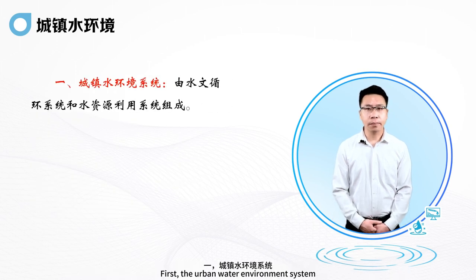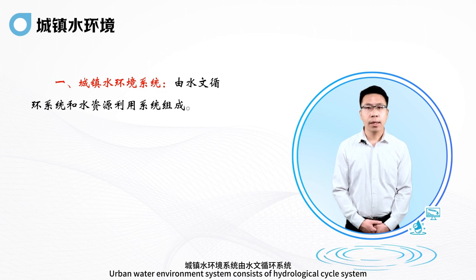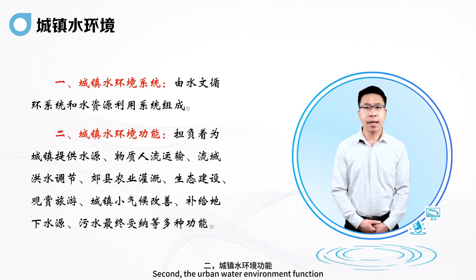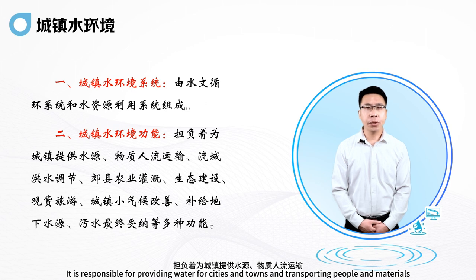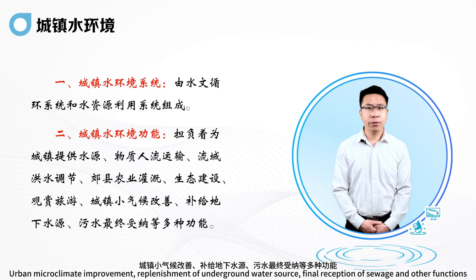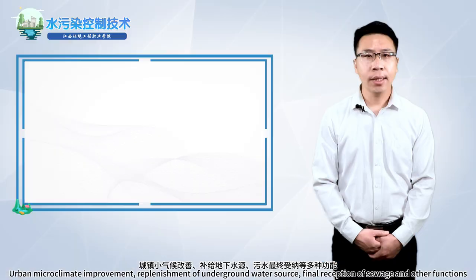First, the urban water environment system consists of a hydrological cycle system and a water resources utilization system. Second, the urban water environment functions include providing water for cities and towns, transporting people and materials, flood regulation in river basins, agricultural irrigation in suburban counties, ecological construction and ornamental tourism, urban microclimate improvement, replenishment of underground water sources, and final reception of sewage.